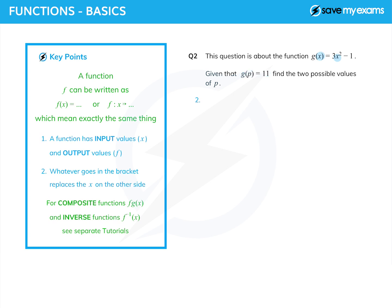Well, let's start by doing what we can. What is g(p)? Well we said earlier that whatever goes in the bracket replaces the x. So I've got a p, and that's equal to 3p² minus 1. Again, I've just replaced the x by p on both sides.